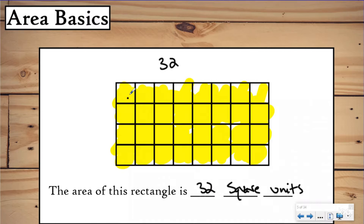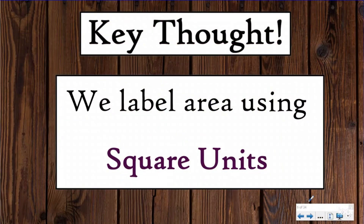That's how you find area — you're looking at how many square units or unit squares it takes to cover the shape completely, without overlapping. They have to be right next to each other, not on top of each other. So the key thought is: when we talk about area, we label it using square units. You'll never just say the area was 14 — you'll always say 14 square units, or units squared. You have to recognize that when you're doing area, you're covering it with squares.